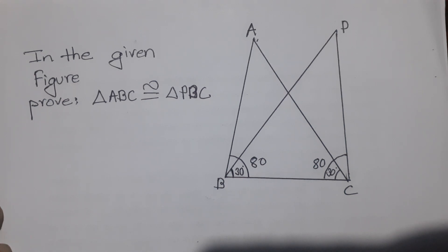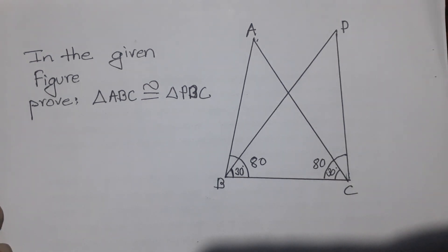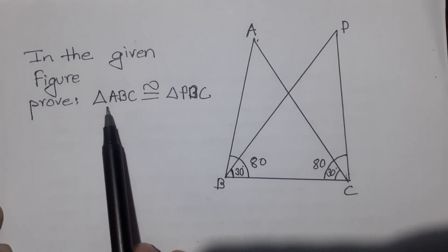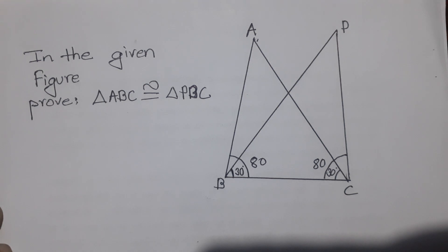In the given figure, prove that triangle ABC is congruent to triangle PBC. In this particular figure, you can see the triangles overlapped, and the given figure shows triangle ABC is congruent to triangle PBC.